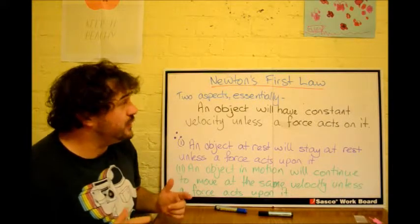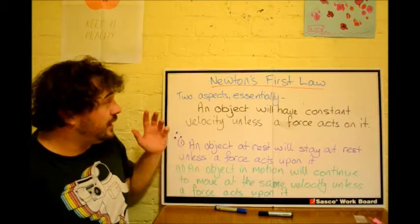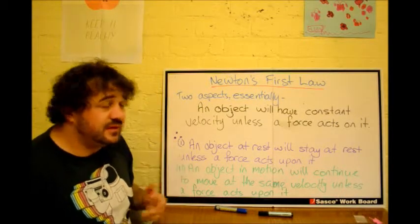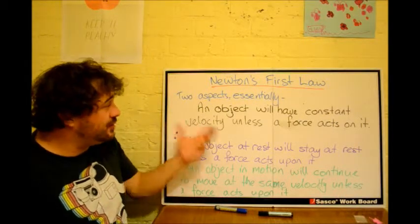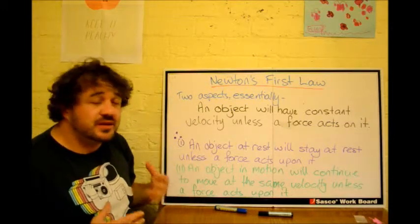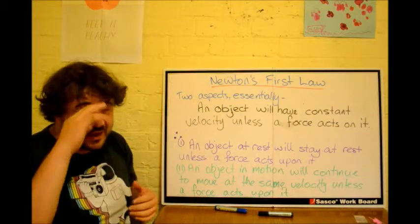All right, physicists, so let's talk about Newton's first law of motion. First off, it has two aspects, but what it means is that an object will have constant velocity unless a force acts upon it.